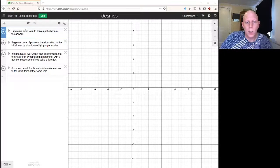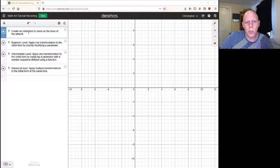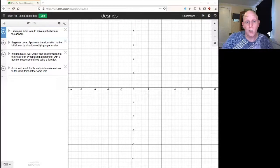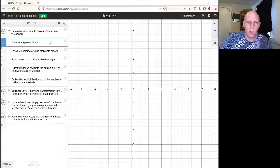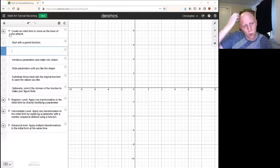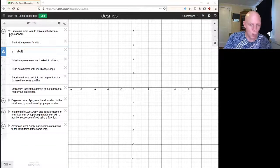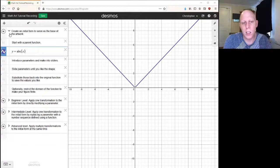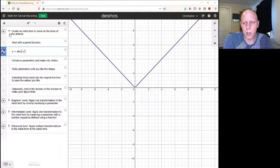We'll go through multiple steps. In this first step, we're going to create an initial form that will serve as the base of the artwork. Let's start with a parent function: y equals the absolute value of x. This parent function will be the basis of our art.